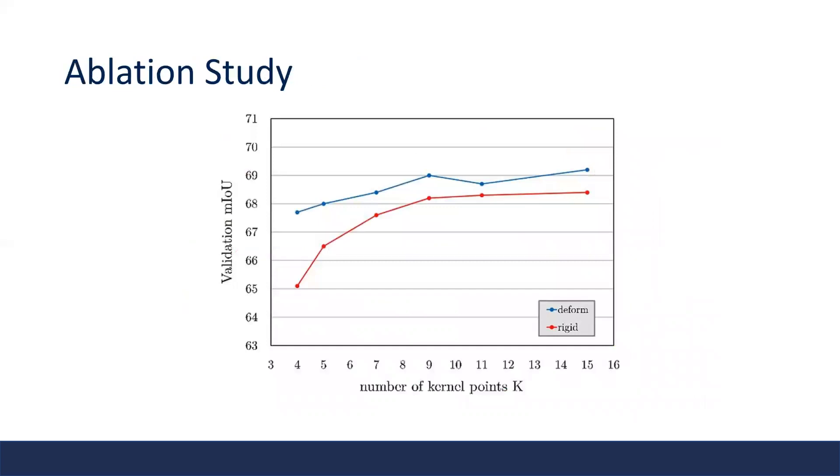Here's an ablation study on the number of kernel points used. By definition, KPConv supports any number of kernel points, but in practice, the performance tends to saturate at around 9 or 10 points. Again, the deformable version always outperforms the rigid one.